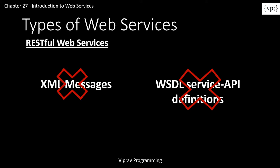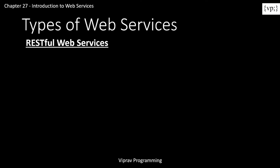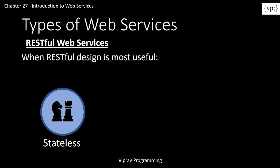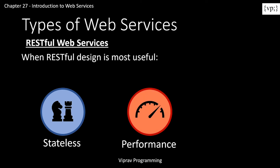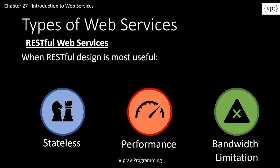There is a JAXRS implementation called Project Jersey that makes it easier for developers to make RESTful web services with Java. A RESTful design is most useful when web services are stateless, meaning that they can stay up even when the servers are down. For performance, RESTful web services are much faster than SOAP designs. And for bandwidth limitation, bandwidth can be limited, which is important on devices like phones due to their inferior hardware compared to PCs.